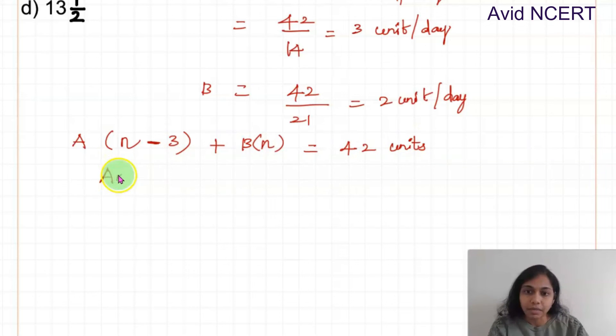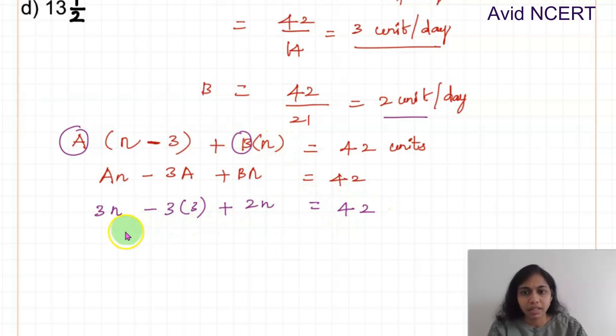By simplifying this we can find the value of N. Which is AN minus 3A plus BN equals 42. We know the value of A which is 3 units per day and the value of B which is 2 units per day. So substituting those values: A is 3, so 3N minus 3 into A which is 3 plus B is 2, so 2N. Simplifying this which is 3N plus 2N equals 5N minus 3 times 3 is 9 equals 42.